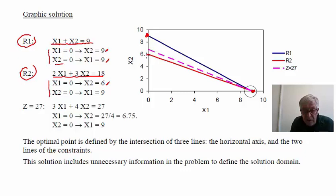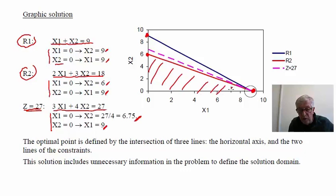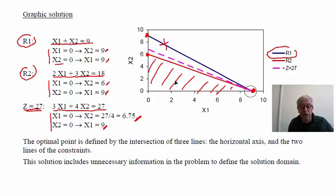From the graphical solution, the intersection with the horizontal axis will be at x1 equal to 9. We can also draw the line z equal to 27, because this is the line corresponding to the optimal value of z. The solution domain is clearly identified, and we can see that restriction number 1 is not necessary to define the solution domain. The optimal point is defined by the intersection of three lines — the horizontal axis and the two restrictions — but to define a point in two-dimensional space, we need only two lines. This is how we get the degenerated solution: we have more information in the problem than we need to specify the solution domain.